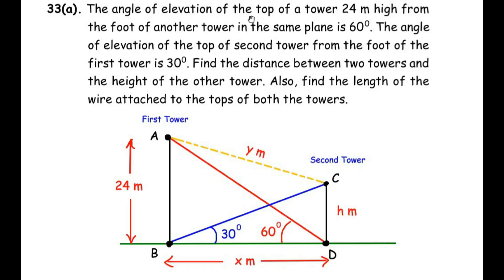The angle of elevation of the top of the first tower (24 meters high) from the foot of the second tower means both towers are on the same level. If you stand at the foot of the second tower and look at the top of the first tower, you make an angle of elevation of 60 degrees. If you stand at point B and look at point C, you make an angle of elevation of 30 degrees.